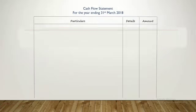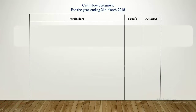This is the format of cash flow statement, which comprises particular details and an amount column. At the top of the format, we write 'Cash Flow Statement for the year ended' or 'for the period ended' — for whatever period you are preparing it. For example, here we are preparing it for the period ended 31st March 2018.